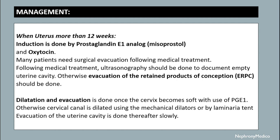Following medical treatment, ultrasound should be done to document an empty uterine cavity. Otherwise, evacuation of the retained products of conception should be done. Dilatation and evacuation is done once the cervix becomes soft with the use of prostaglandin E1. Otherwise, the cervical canal is dilated using mechanical dilators or by laminaria tent process, and evacuation of the uterine cavity is done thereafter slowly.